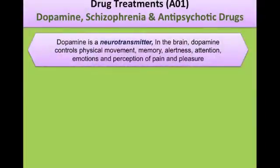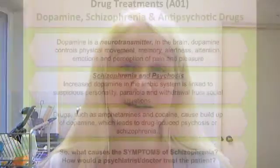When people take chlorpromazine or clozapine, it's because they've got an issue with a neurotransmitter called dopamine. Dopamine deals with physical movement, memory, alertness, attention, emotions, and perceptions of pain and pleasure. Everybody has dopamine in their brain, but people who have schizophrenia and psychosis — there's a theory that they've got too much dopamine.